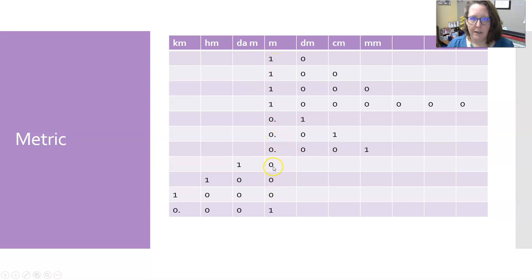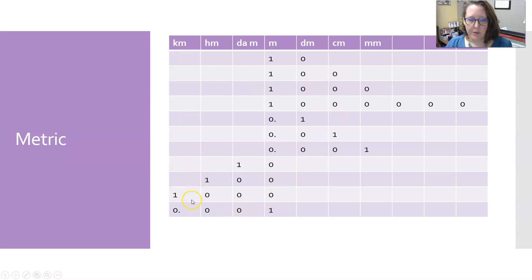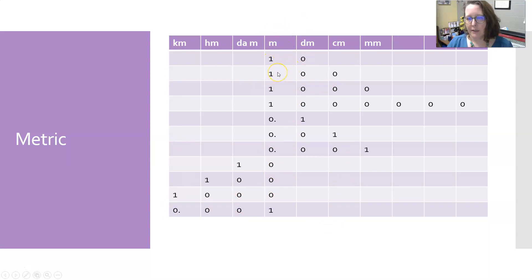Going the other way, a decameter is 10 meters, a hectometer is 100 meters, and a kilometer is 1,000 meters. Conversely, one meter is a thousandth of a kilometer. And you can substitute liters or grams in the same way — it works identically.